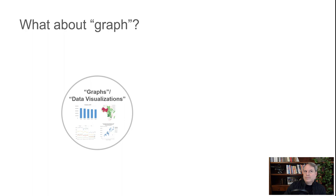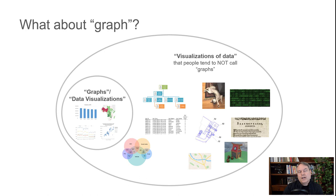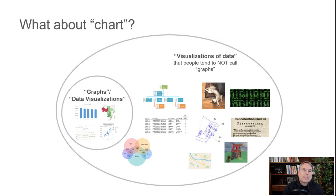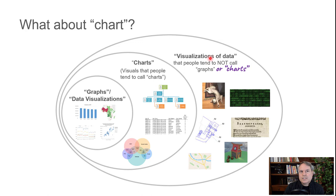I understand that the term graph is used differently in advanced mathematics, but I'll set that aside for now. These graphs or data visualizations are kind of a subset of visualizations of data — a subset that people tend not to call data visualizations or graphs. What about the term chart? If we look at the kinds of images people tend to refer to as charts, it's kind of a subset of visualizations of data. People tend not to call these charts, but they do call these charts. And then graphs are basically a subset of charts — some charts people call graphs, but some others they tend not to.